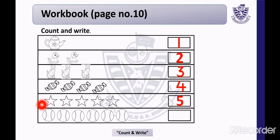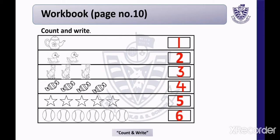Now the last row — this row is full of balls. Count with me — how many balls are there? 1, 2, 3, 4, 5, and 6. These are 6 balls. Now we will write number 6 in the given block.